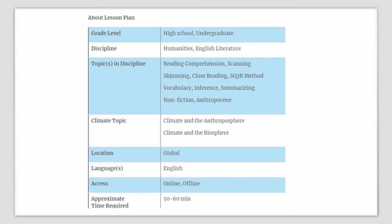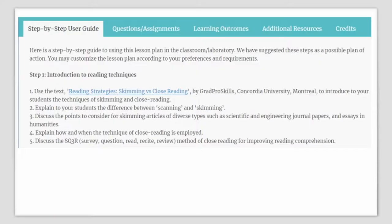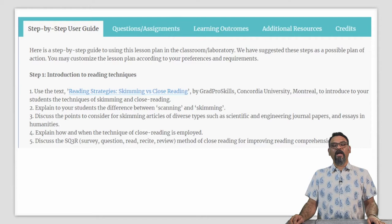This lesson plan includes a text introducing various reading techniques such as skimming and close reading, a reading titled 'Geology of Mankind' by Paul Crutzen that describes the concept of the Anthropocene, and a short classroom or lab activity to better engage students and test their understanding of the text followed by analysis of answers through review. Here is a step-by-step guide towards using this lesson plan in your classroom. Please feel free to modify this as per your requirements.